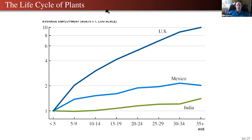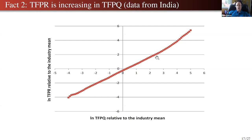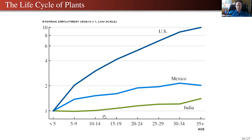A potentially related fact: suppose this relationship was due to tax rates — if you're efficient you get big and then face a higher tax rate, so your TFPR is bigger. That might affect dynamic incentives — you might have less incentive to increase your TFPQ if, when you're bigger, you become more formal and subject to higher taxes and regulations. This is average employment over the lifecycle: it's really steep in the US as firms age, much flatter in Mexico, and even flatter in India. This is a potential dynamic implication of the static correlation between TFPR and TFPQ.